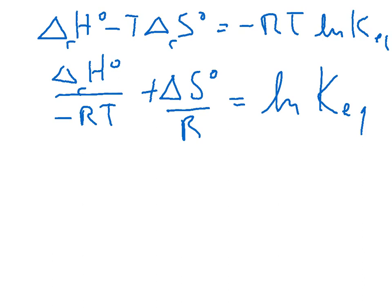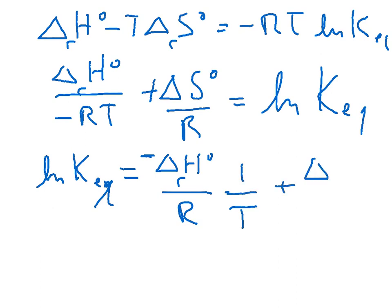So we've got delta H over negative RT plus delta S over R is equal to the log of K. So we could rewrite this, let's just rewrite this a little bit, I'll put the log on the left-hand side, log K equilibrium.